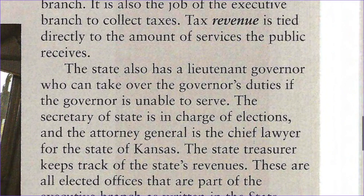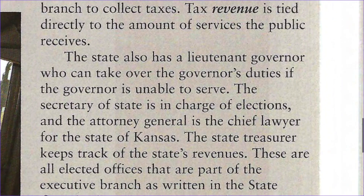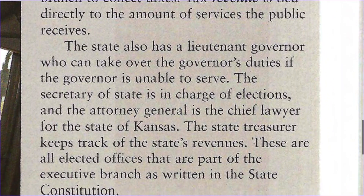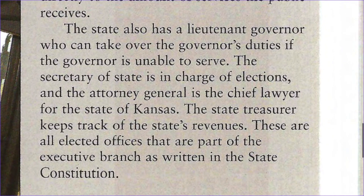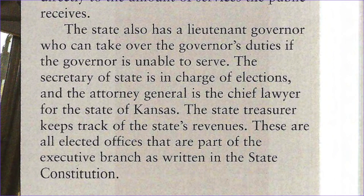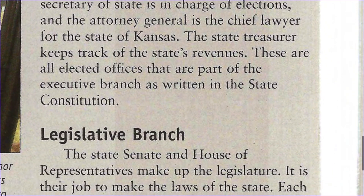The secretary of state is in charge of elections, and the attorney general is the chief lawyer for the state of Kansas. The state treasurer keeps track of the state's revenues. These are all elected offices that are part of the executive branch as written in the state constitution.